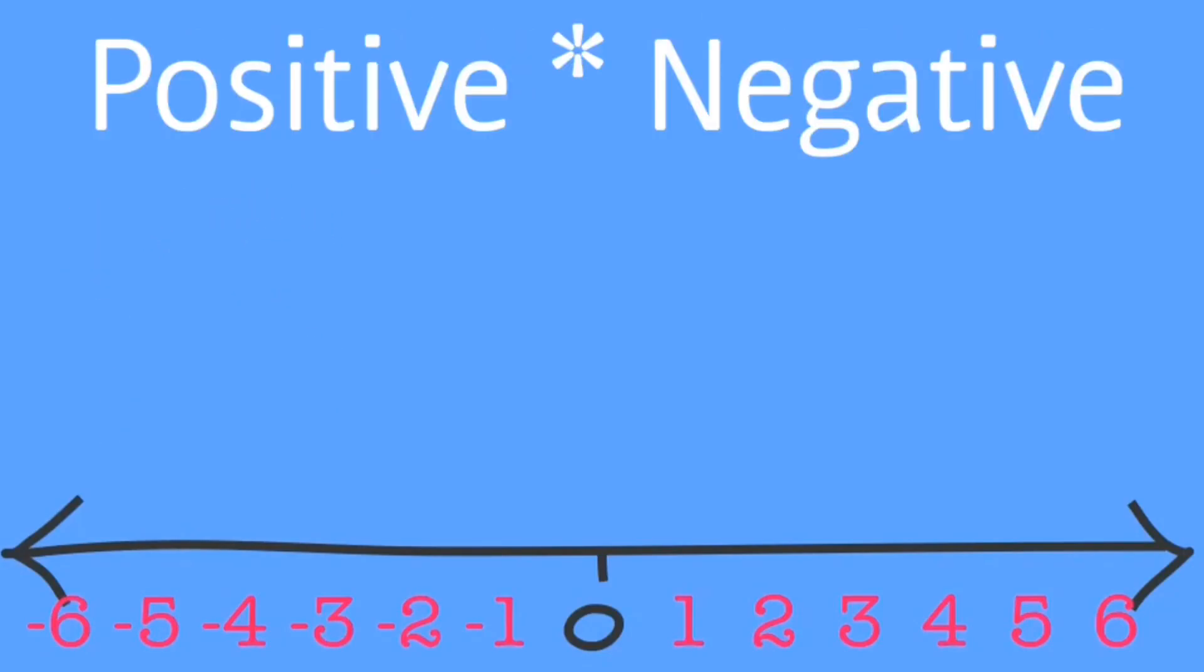The third example starts with a positive factor. So the individual on the number line will be facing right. And the second factor is negative, which means that the person will be walking backwards, also resulting in a negative product.